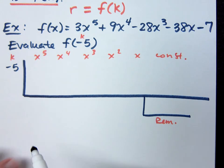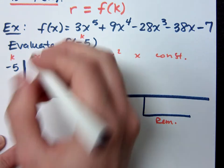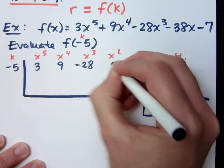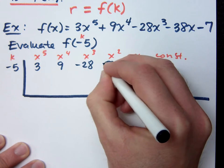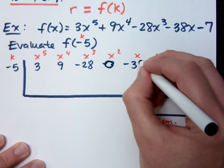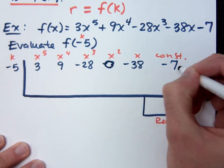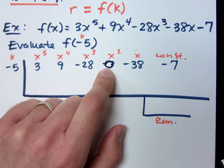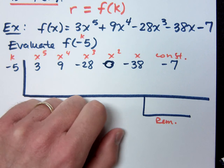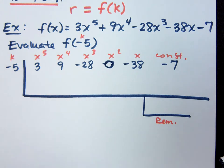So what are your coefficients? The coefficient for x to the 5th is 3, then 9, minus 28. Then there's a 0 — I almost put negative 38 there, but that would have been wrong. Then negative 38, then negative 7. Why would it have been wrong to put negative 38 right after minus 28? Because I don't have an x squared term — I'm missing that, so I need to put a 0. If you had done long division, you would have seen why having a 0 there is important so that columns line up correctly.